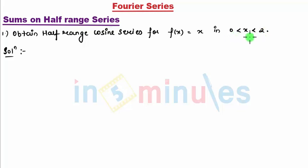So first we will be mentioning half range cosine series. My half range cosine series is f(x) = a₀ + summation aₙ cos(nπx/l).